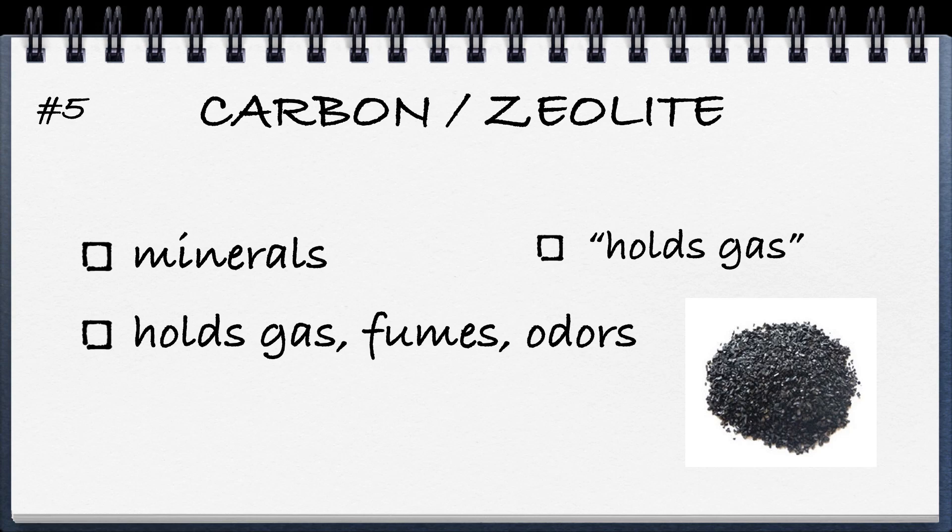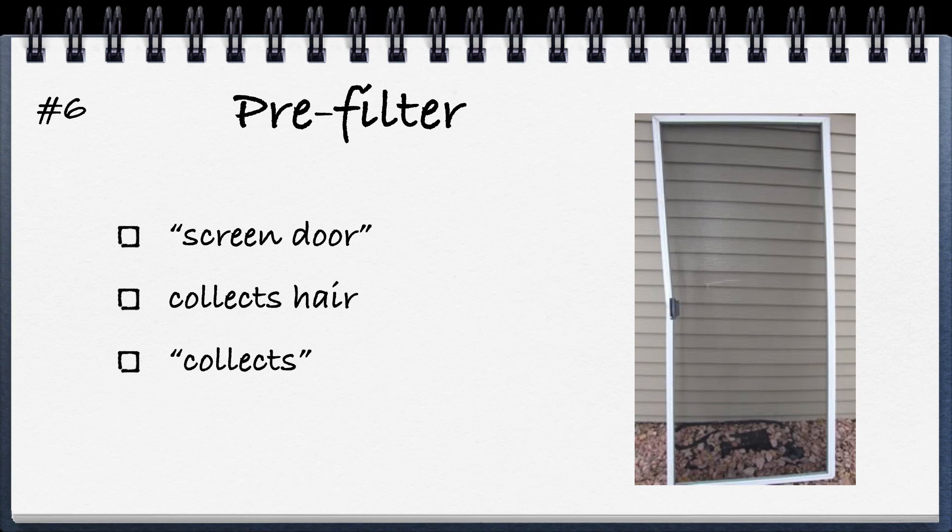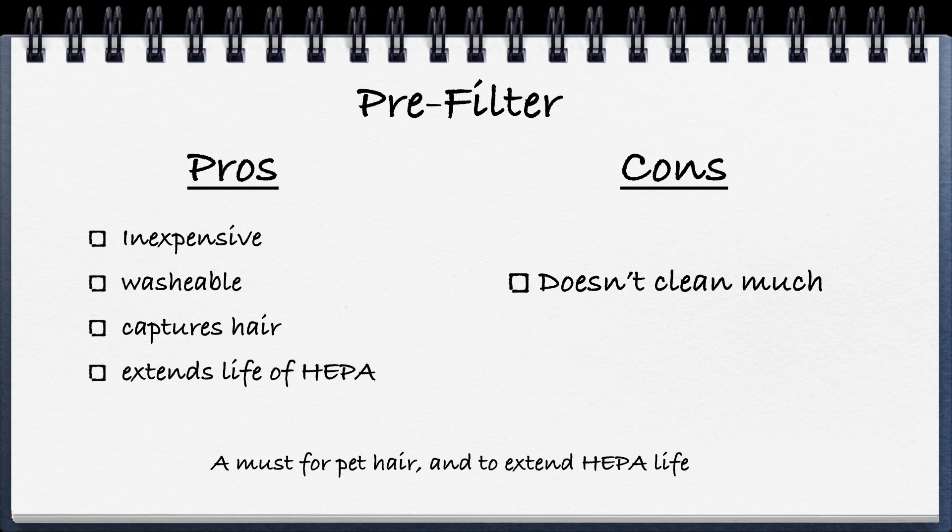Next is carbon and/or zeolite. Both are minerals that are very porous, with thousands of little openings and crevices, making them good at holding gases, fumes, and odors. Pros: inexpensive, captures odor and fumes better than anything. Cons: must be replaced periodically, doesn't clean the air — only captures gases — and replacement filters can be overpriced. Next is the pre-filter, which works like a screen door catching large particles like hair. Pros: inexpensive, washable, captures hair, and extends the life of the HEPA filter so it won't fill up as quickly, saving you money.